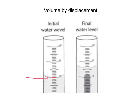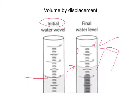After you record this — called your initial water level — you're going to put your object in. Be careful, you don't want to splash. If you drop the object in and water splashes, that's going to mess up your volume measurement. A good way to do this is to tilt your graduated cylinder at an angle and then slide your object in at a slant until it gently enters the water. Then put it back upright.